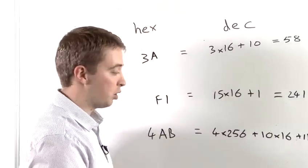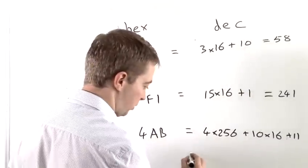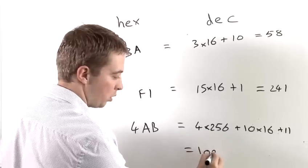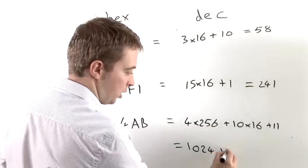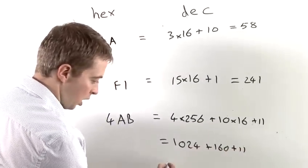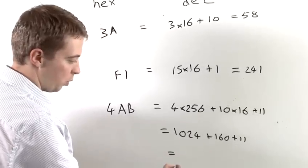So now what we do have to do is multiply all of these together. So 4 times 256 is 1024. 10 times 16 is 160. And also we're adding on 11.